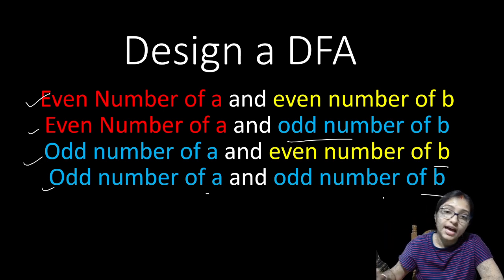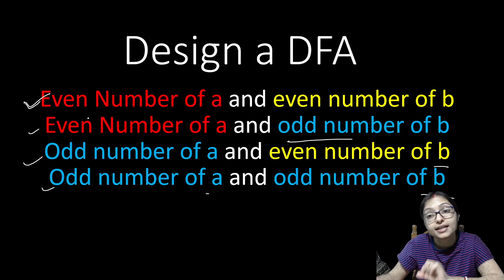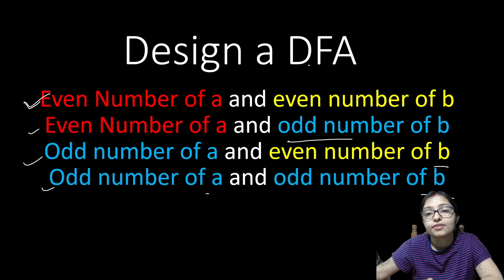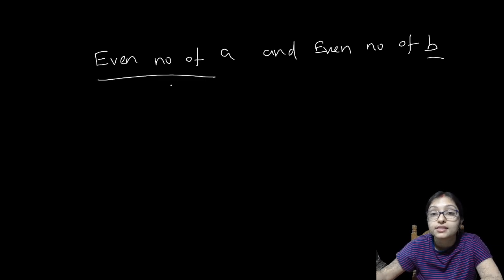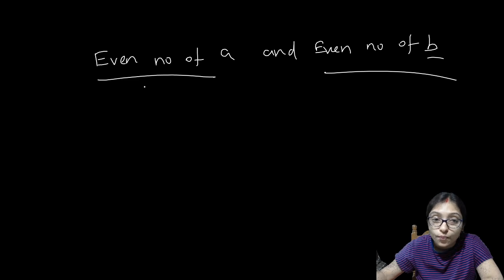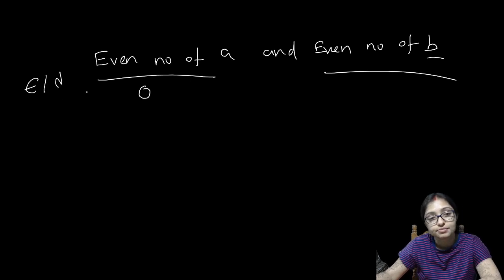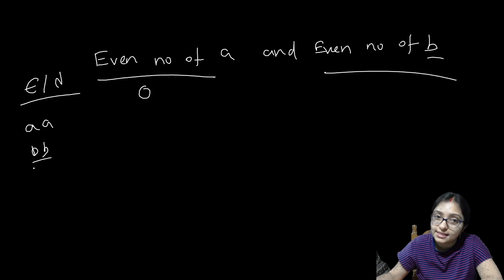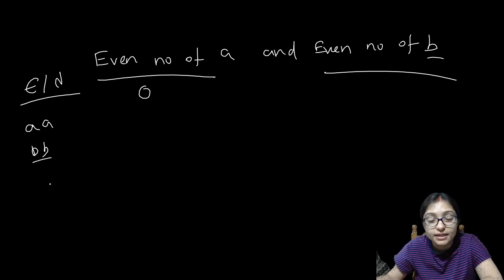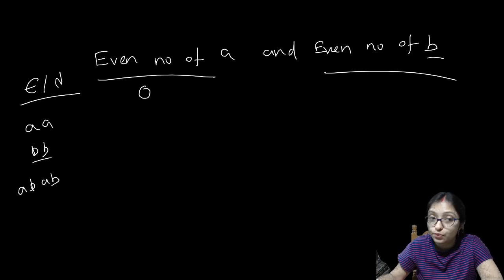First of all, think about what even number of A and even number of B means. Even number means remainder 0. So the empty string (epsilon/lambda) is accepted here. Next, AA is accepted, BB is accepted. Also AABB and ABBA and ABAB will also be accepted.